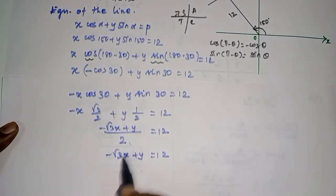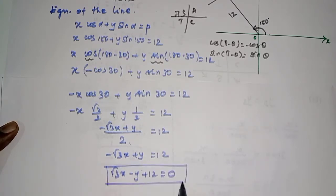Finally, rearranging to the right side, root 3 x minus y plus 12 is equal to 0. This is the equation.